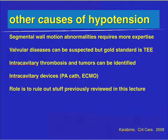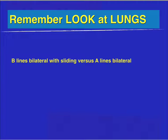Remember other causes of hypotension: segmental wall motion abnormalities, valvular diseases, intercavitary thrombosis and tumors blocking LV outflow, and intercavitary devices such as PA catheters. Remember to look at the lungs — B lines bilateral with lung sliding versus A lines bilateral. Even with poor heart function and no B lines, a hypotensive patient may benefit from a small fluid bolus of 250–500 mL alongside inotropic agents. The ultrasound gives you the ability to evaluate for pulmonary edema simultaneously.